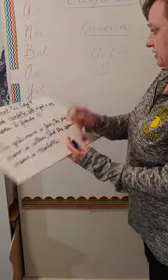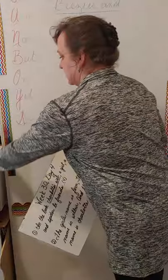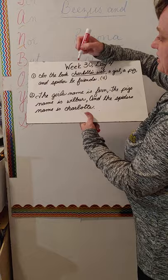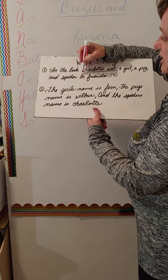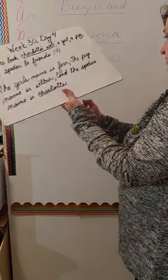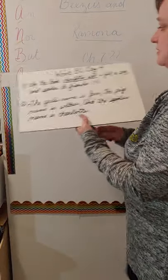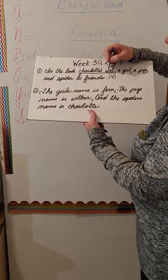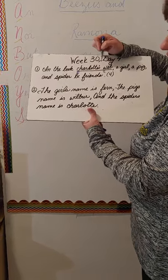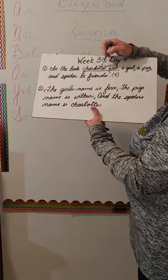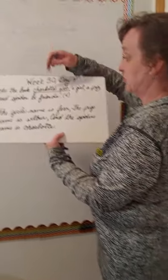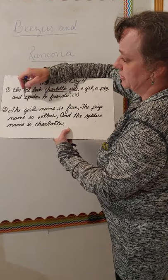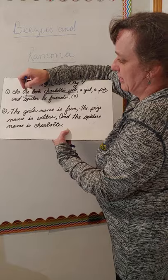Let's make sure we get this the right way. Charlotte's Web is the name of a book and they underlined it, so that's good, but what did they not do? They did not capitalize the name of the book. So Charlotte's should be capitalized and Web should be capitalized. Notice the apostrophe S - that means the Web belongs to Charlotte. Remember that's important this week. A girl, a pig, and spider - we're missing something. Let's make that A spider.